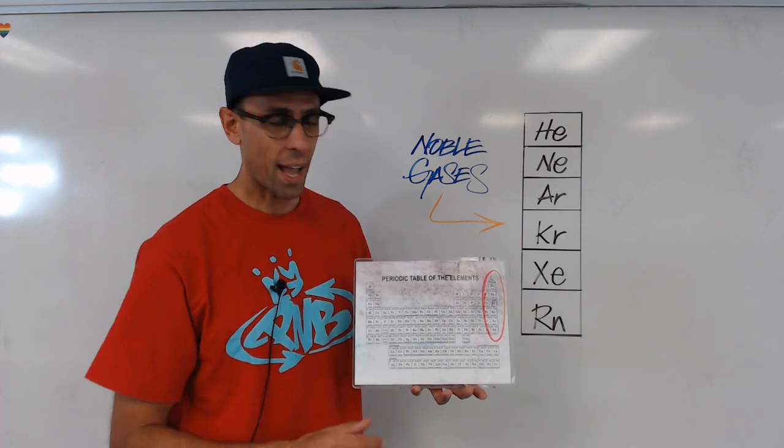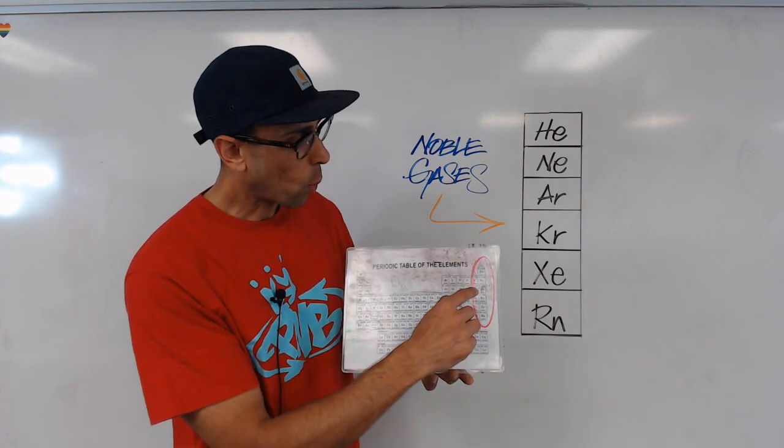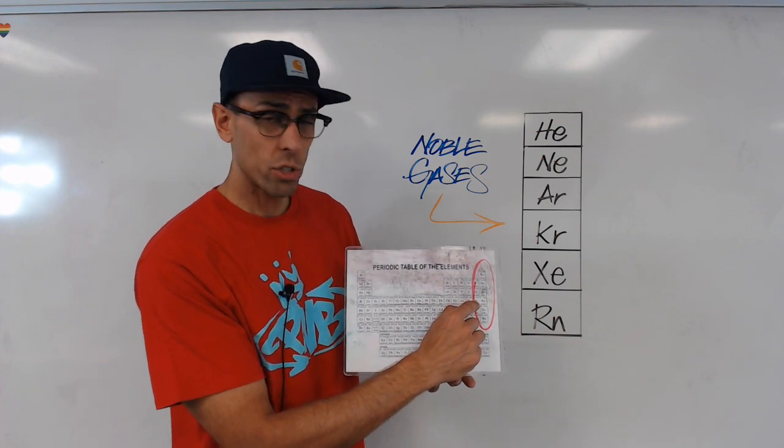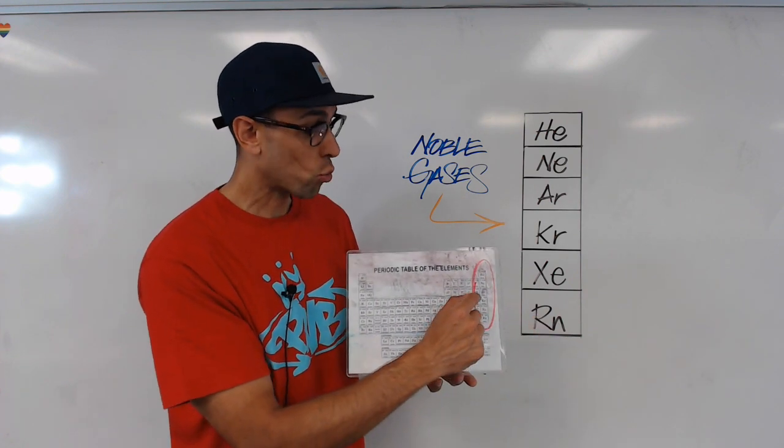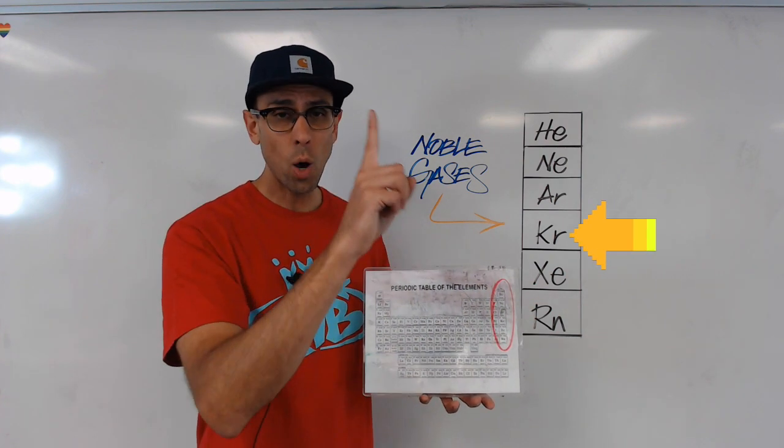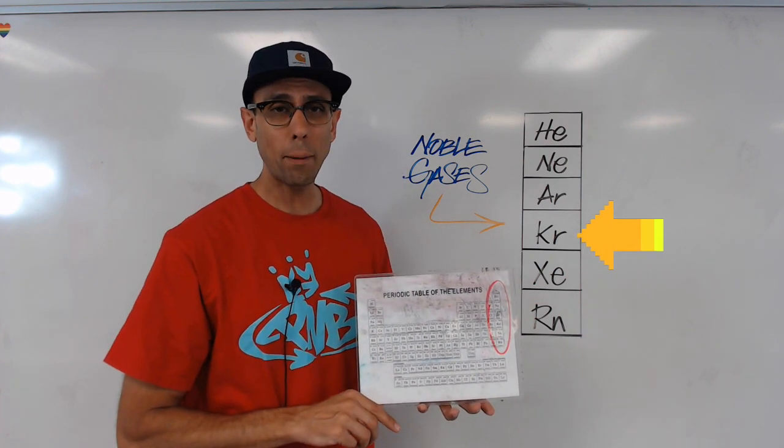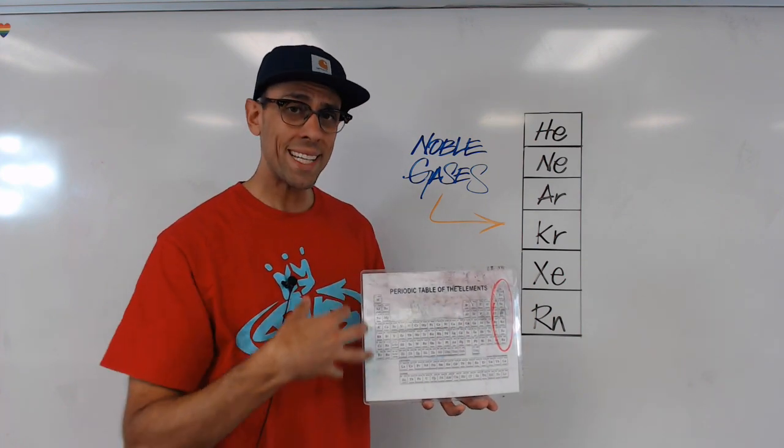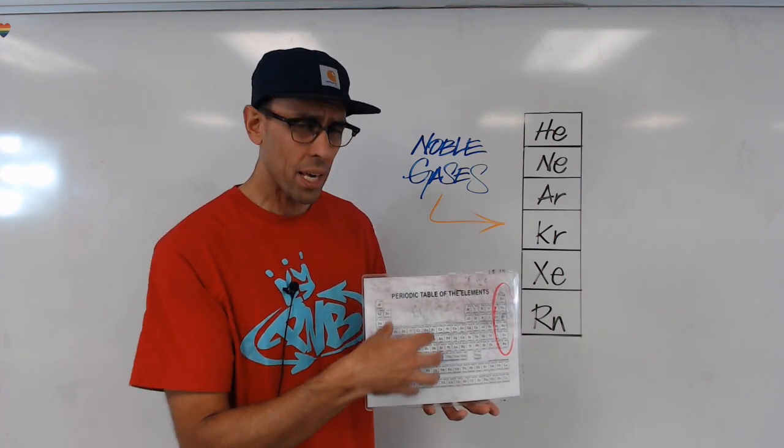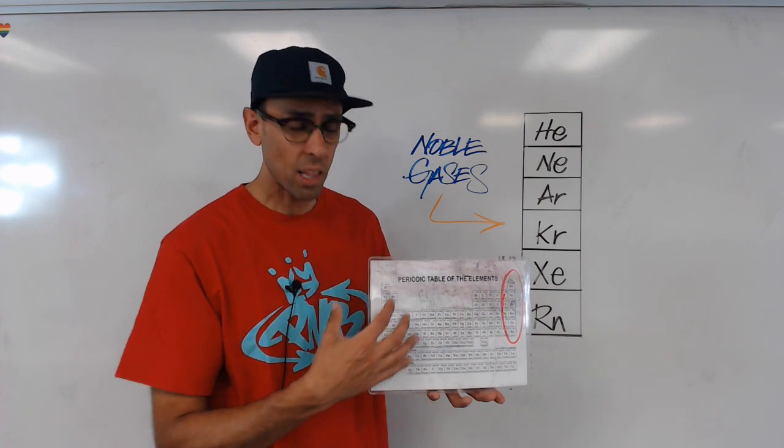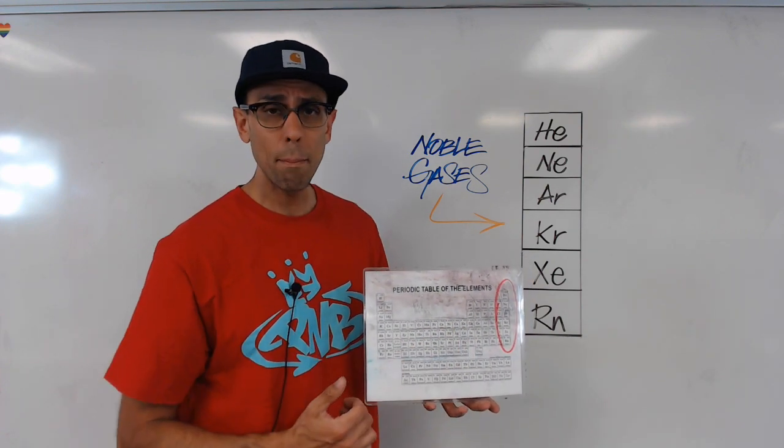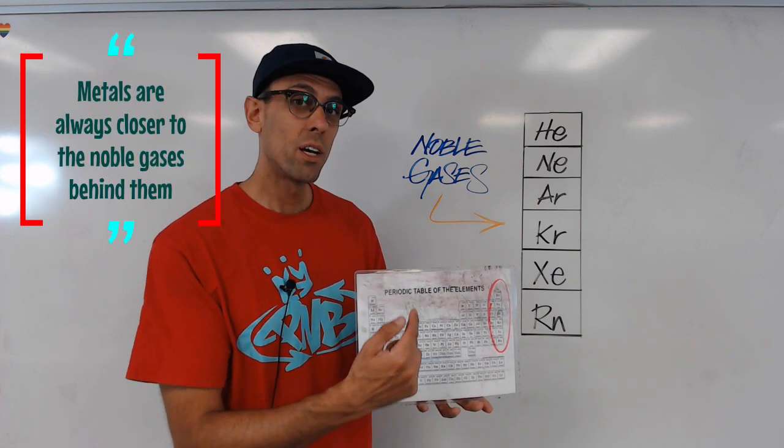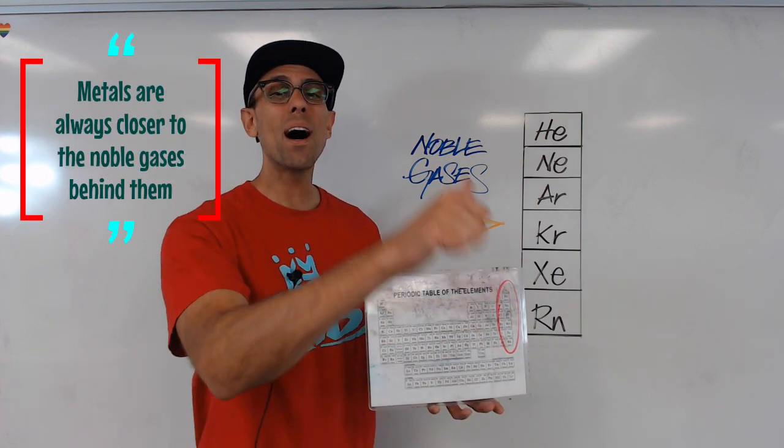Now, on the other hand, if I was to ask you what the closest noble gas to bromine was, well, in that case, you're certainly going to just look ahead, because right next to it, there's krypton, only one atomic number away. So it turns out that there's a pattern. All of our metallic elements, which tend to be on this left-hand side of the periodic table, and also in the middle, they're always going to be closest to the noble gas behind them.